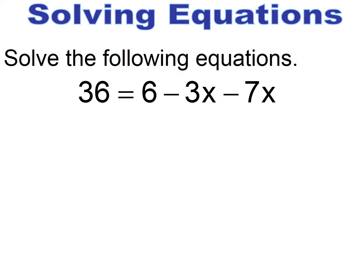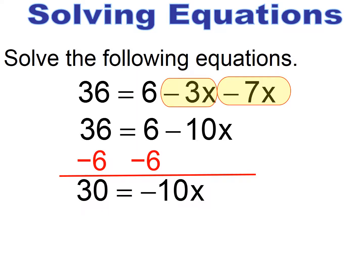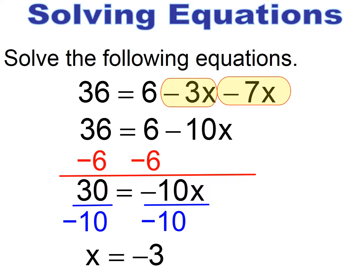Pause and try. The variables on the right-hand side: I combine like terms. In this case I have the same sign, so I add and keep the sign, ending up with negative 10x. Now I move that 6 — it's positive, so to move it I subtract it from both sides and I'm left with negative 10x. I divide both sides by negative 10 and get the solution x equals negative 3.